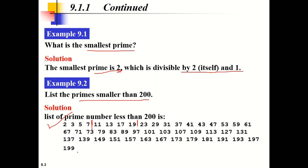This list shows prime numbers less than 200. Up to 20, we have 8 prime numbers. Up to 50, we have 15 primes. Up to 100, we have 25 primes. Up to 200, we have 46 primes. This count keeps decreasing in proportion as numbers get larger.